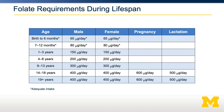Looking at folate requirements across the lifespan, males and females require about the same amount of folate throughout their lives. However, during pregnancy and lactation the requirements are much higher — 600 micrograms per day during pregnancy and 500 micrograms per day during lactation. That's because the mother needs to provide folate for building the placenta and the developing fetus. During lactation, the mother must supply her own folate requirements plus the dramatic folate needs of the infant from birth to six months, since they typically get folate through maternal milk.